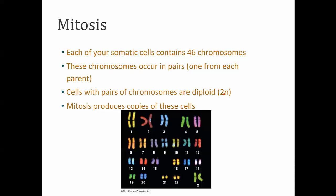Diploid, or 2n. So when I say ploidy, I'm asking: is it haploid or is this cell diploid? And 2n just means 2 times the haploid number. So in the case of human somatic cells, we have 46 chromosomes. In the case of our gametes - our sperm and egg - we have 23. So the diploid number will be 2 times 23, which is 46.